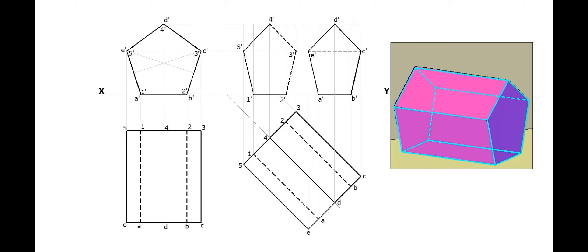Edge 1' 2' is on the ground as part of the rectangular face. Rectangular face 1' 2' A' B' can be seen as a line on the XY line.